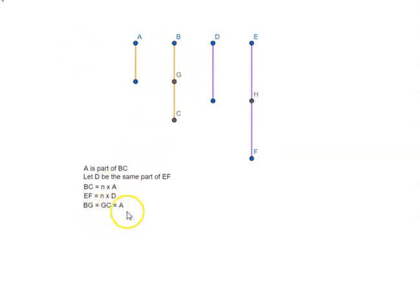So BG is equal to GC is equal to A. Similarly, EH is equal to HF is equal to D.